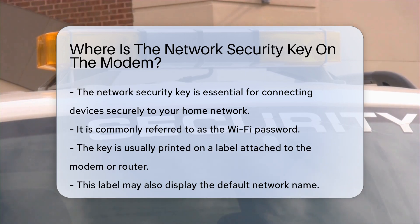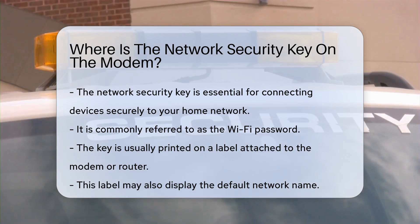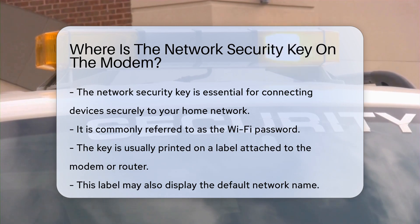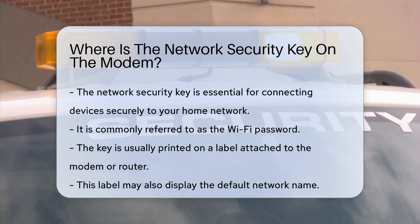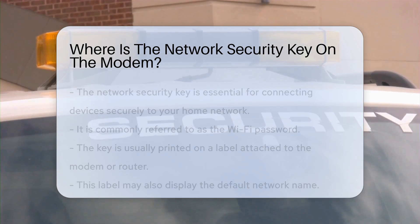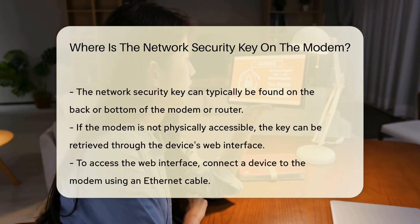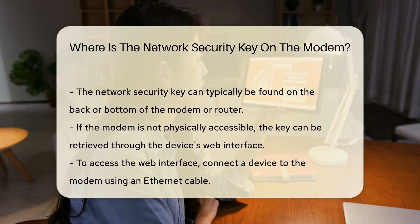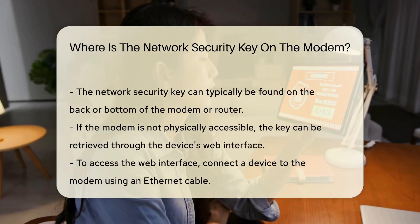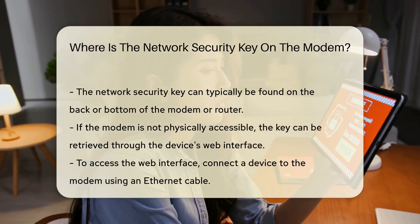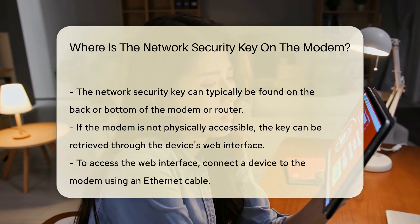Typically, the network security key is printed on a label attached to the modem or router. This label may also include other important information, such as the default network name. The key can often be found on the back or bottom of the device.